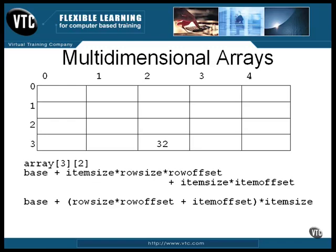In simple terms, you calculate the number of items that come before the one you want. Then you multiply that value by the size of each item. Then add the result to the base address of the array.